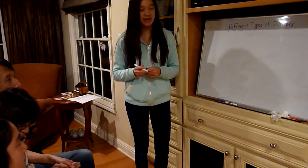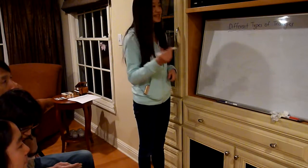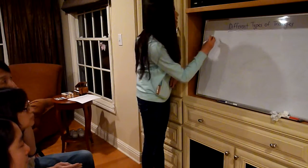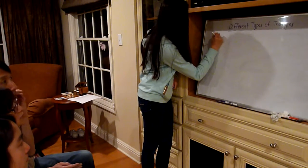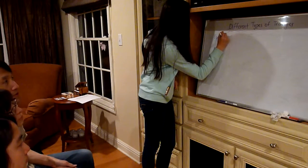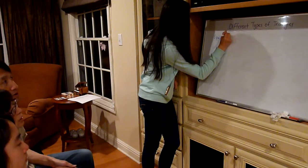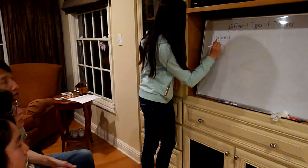The first type of triangle we're going to learn about is an equilateral triangle. An equilateral triangle has three equal sides and three equal angles.